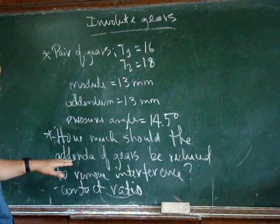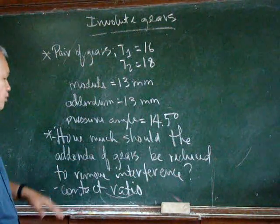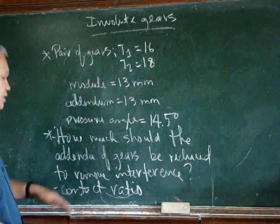How much should the addendum of the gears be reduced to remove interference? And what is the calculation?